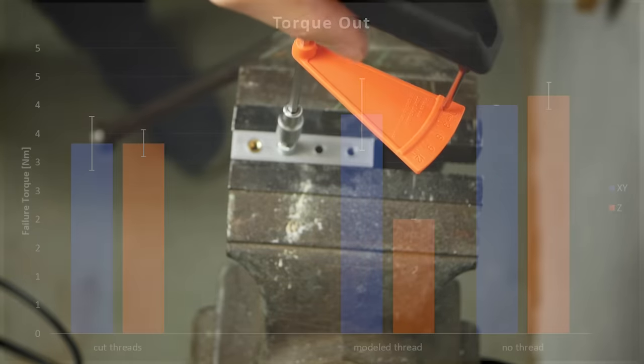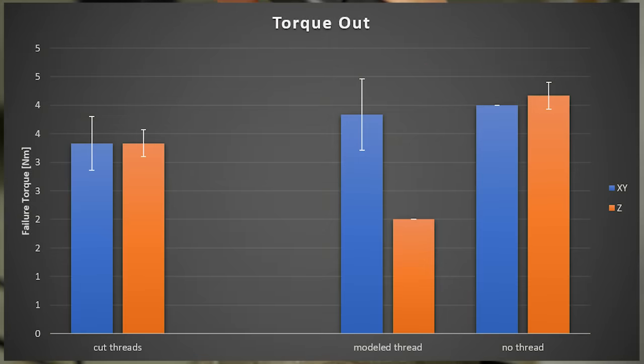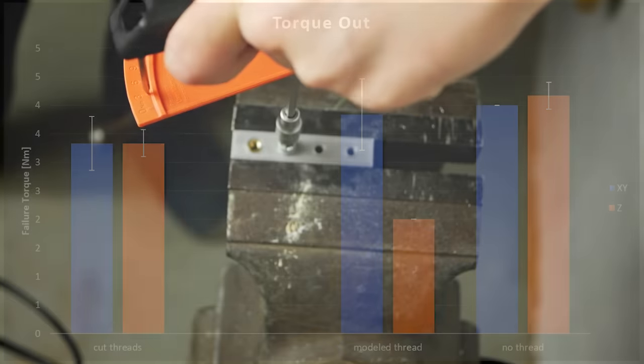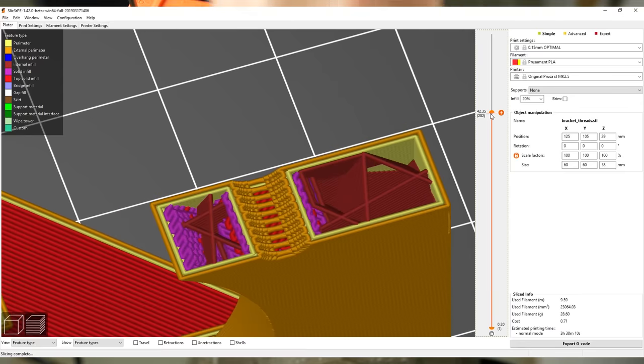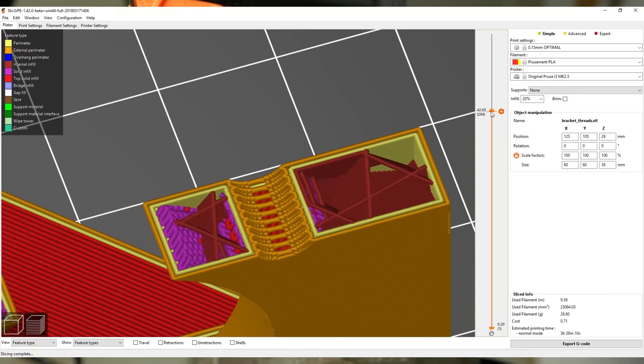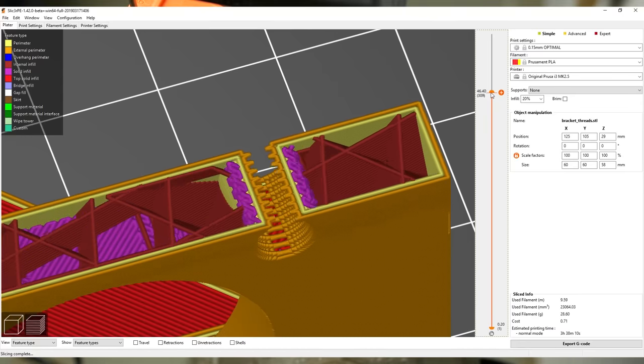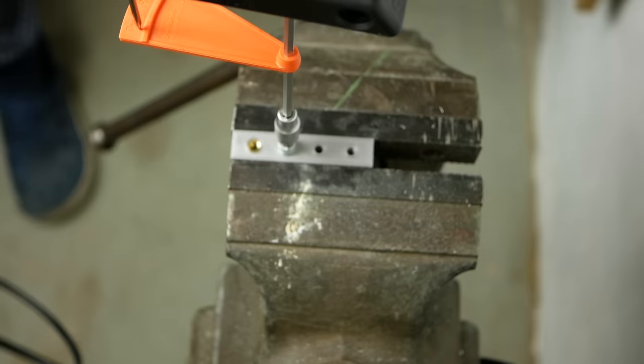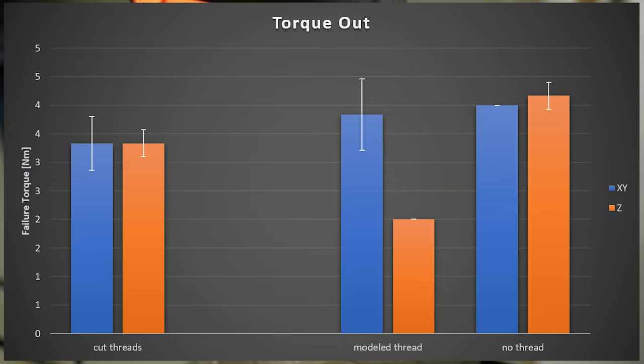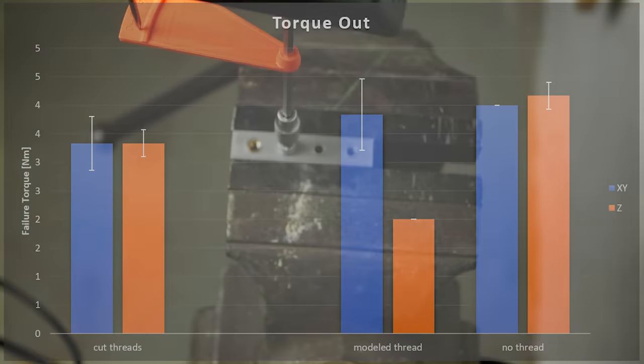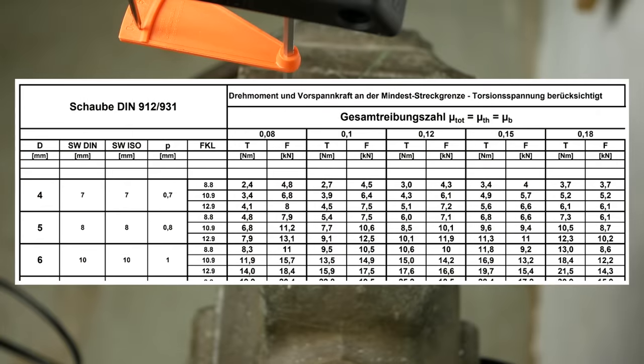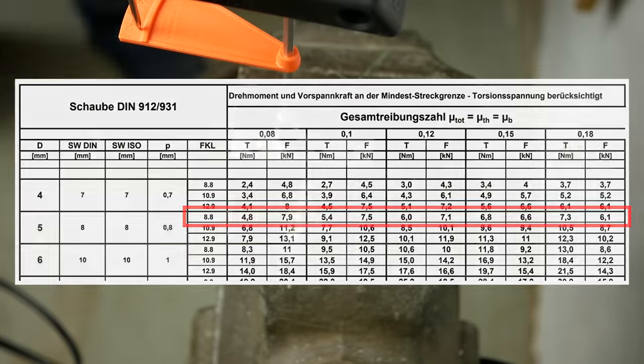The plastic threads again all performed kind of similar with no huge difference besides again the model threads that were printed horizontally. With the 0.4mm nozzle they just didn't print precisely enough to add maximum strength. All threads failed at a tightening torque between 3 and 4Nm which isn't too much but still not too far away from the recommended tightening torque of a regular M5 bolt which is in the range of 6Nm.